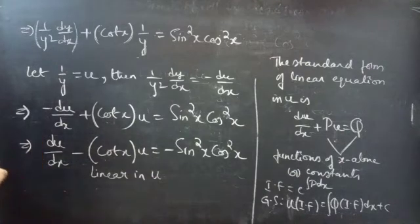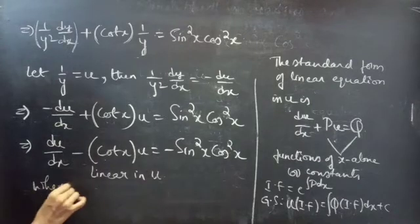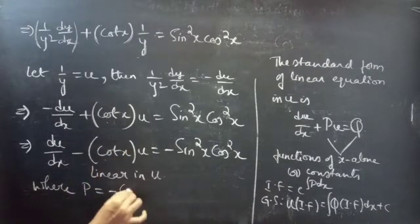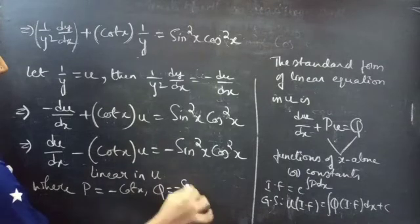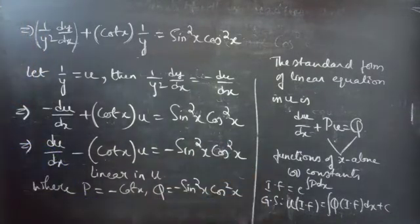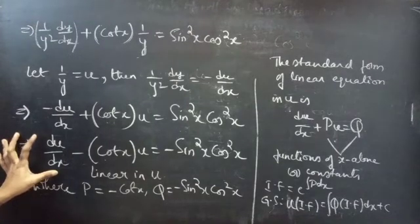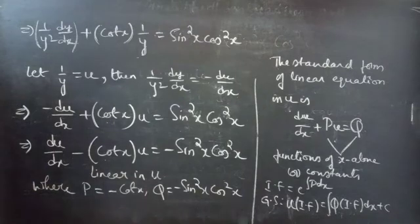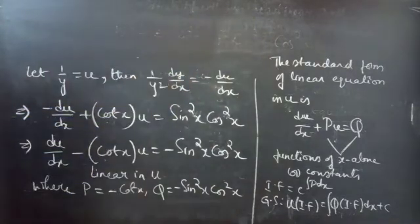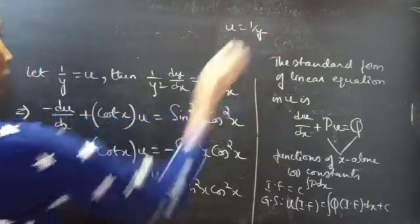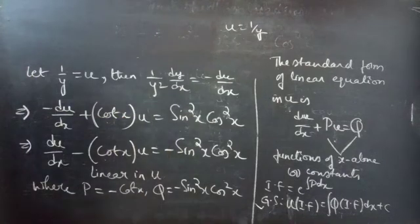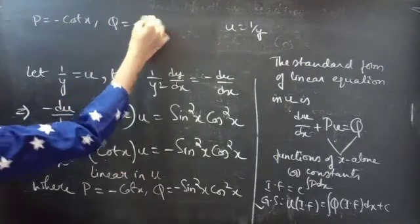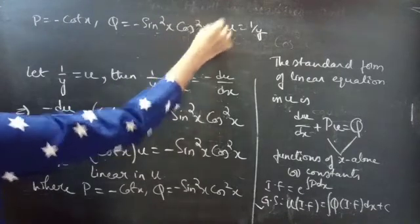By comparing with the standard form du/dx plus p·u equals q, we get p equals −cot(x) and q equals −sin²(x)·cos²(x). Now we find the general solution to this reduced linear equation, which will be the general solution of the given Bernoulli's equation.